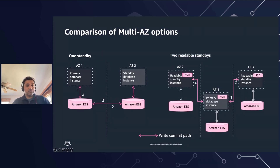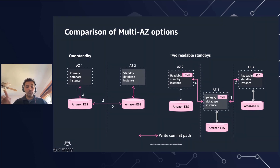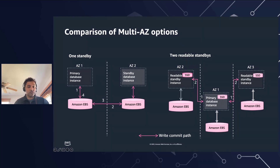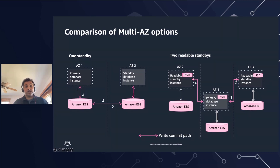In contrast, the two readable standby configuration always comes with three instances — one writer instance and two readable instances. The write path here is: you write to your primary, data flows to both reader nodes, and once we get acknowledgement from either reader, the application gets acknowledgement — a two-step process. So two readable standby is a great option if you're looking for faster transaction commits. Those two readable standby nodes are also available for read-only workloads to scale reads. In case the primary instance goes down, automatic failover occurs and a reader node becomes the writer, typically within 35 seconds.